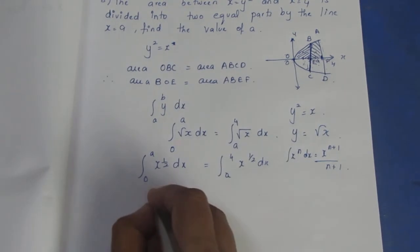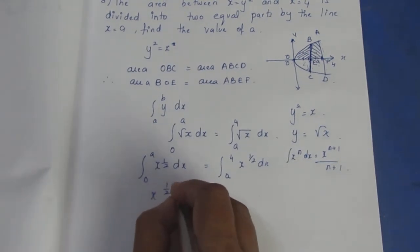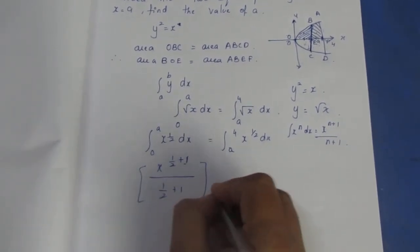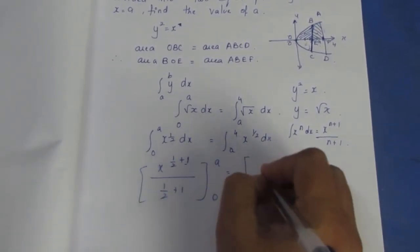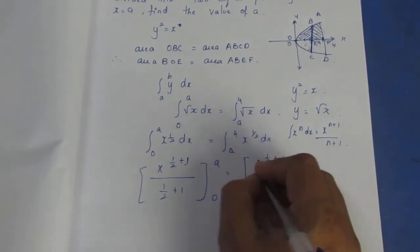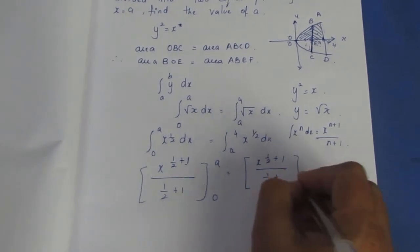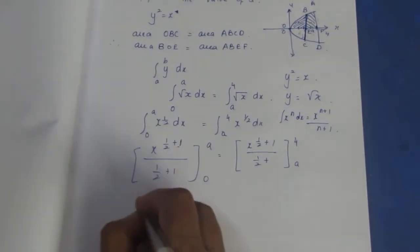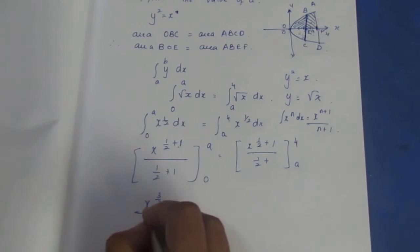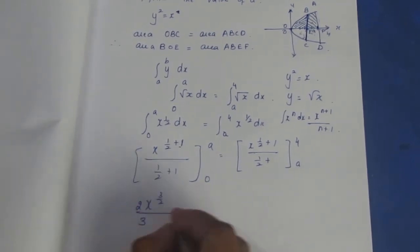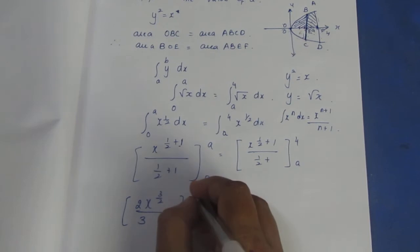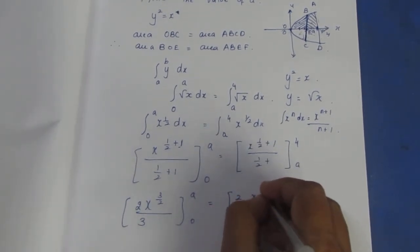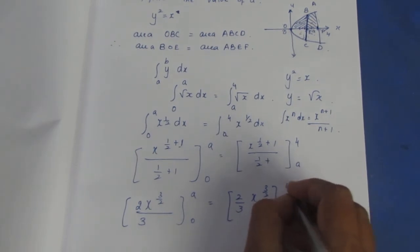Applying the power rule format: x power n gives x power n plus 1 divided by n plus 1. So x power 1/2 integrates to x power (1/2 + 1) divided by (1/2 + 1), which gives x power 3/2 divided by 3/2, or 2/3 times x power 3/2. Evaluate from 0 to a and from a to 4.